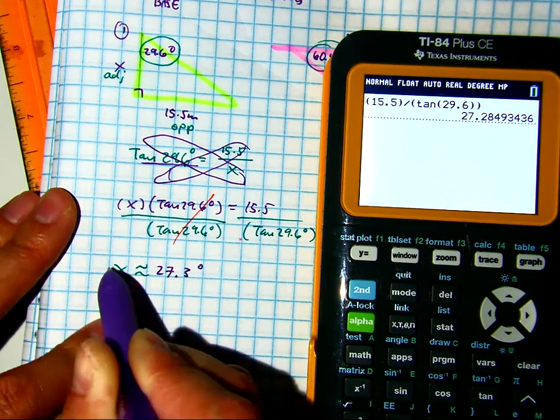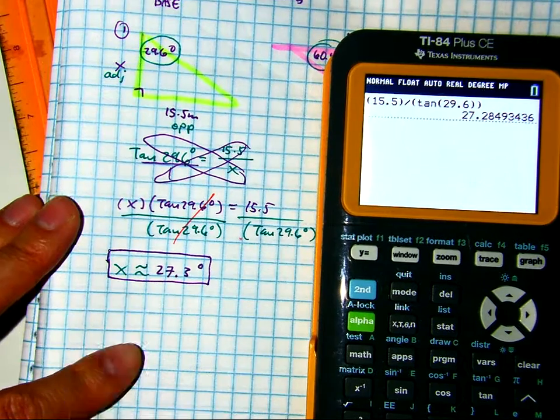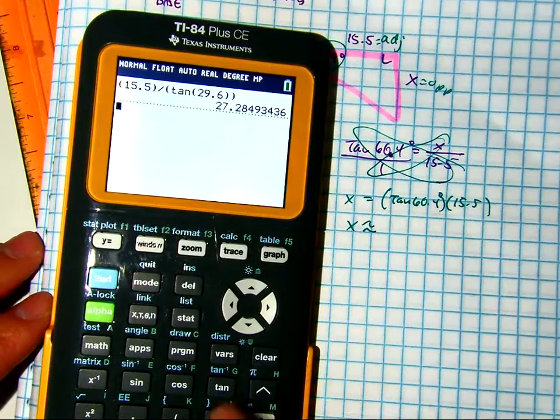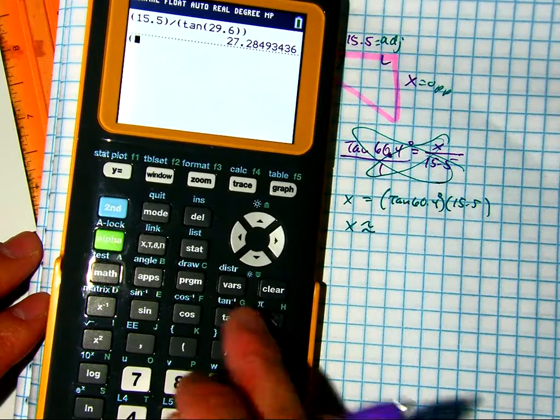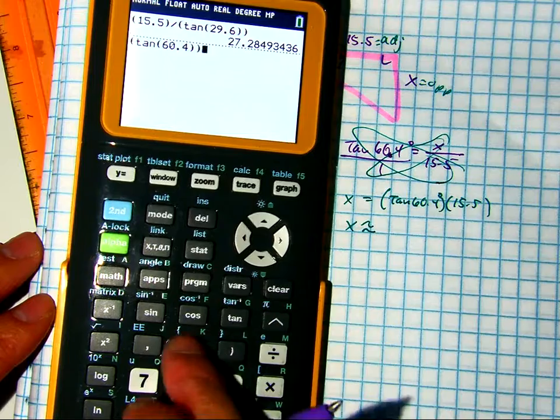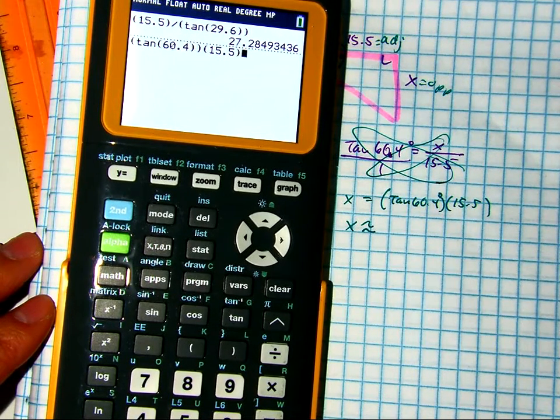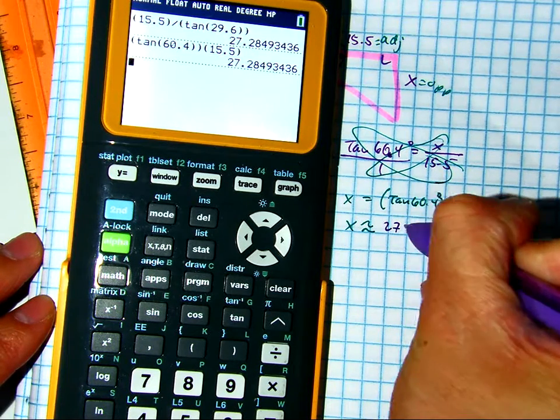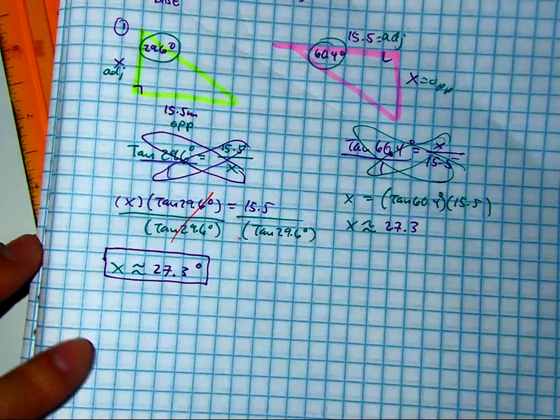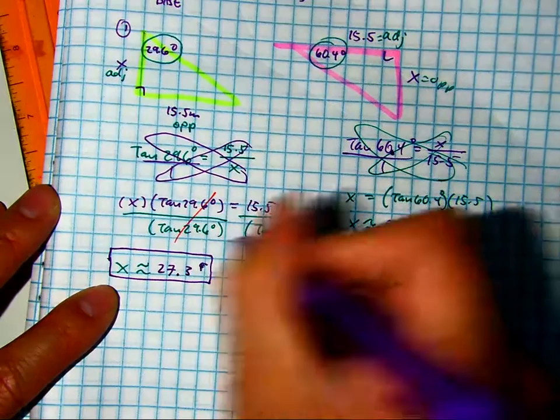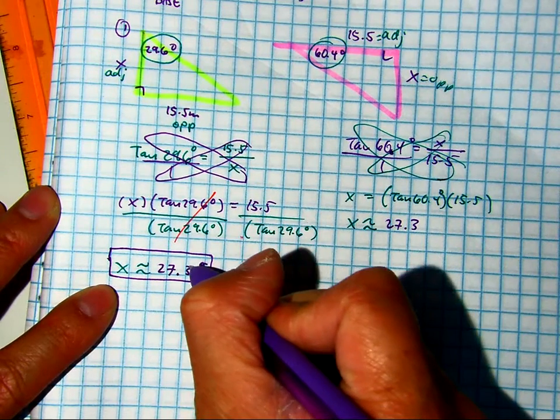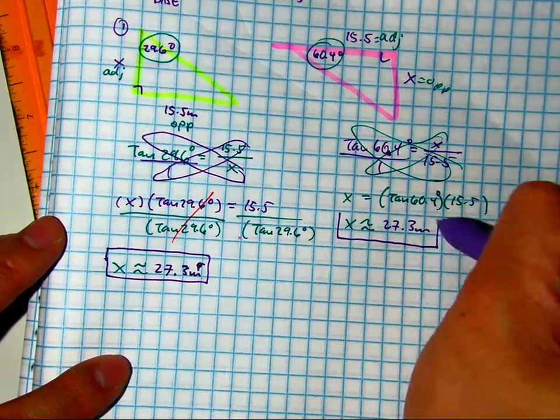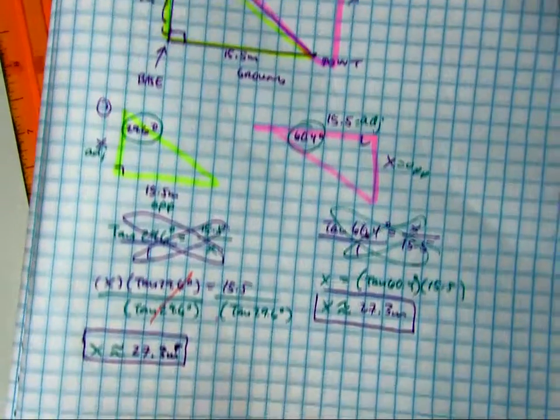Let's go ahead and do the other side now. Tangent 60.4. Parentheses. Tangent 60.4 times 15.5. Close parentheses. Press enter. And you get rounded to the nearest tenths. It is... Oh my goodness. Wait, x is not degrees. Class, look. We got the same answer using a different angle. So class, does it matter which triangle you use? No, it doesn't. So just remember, angle of depression looks down. This is your angle of depression. This is not.